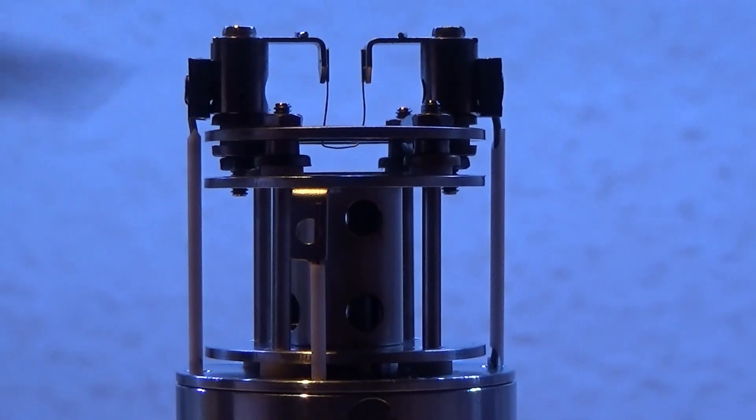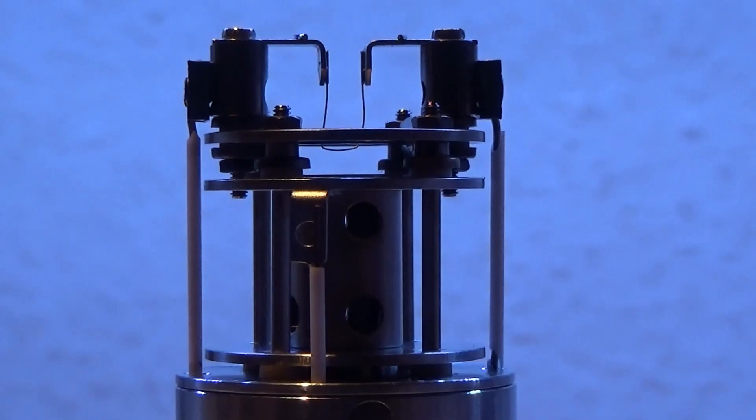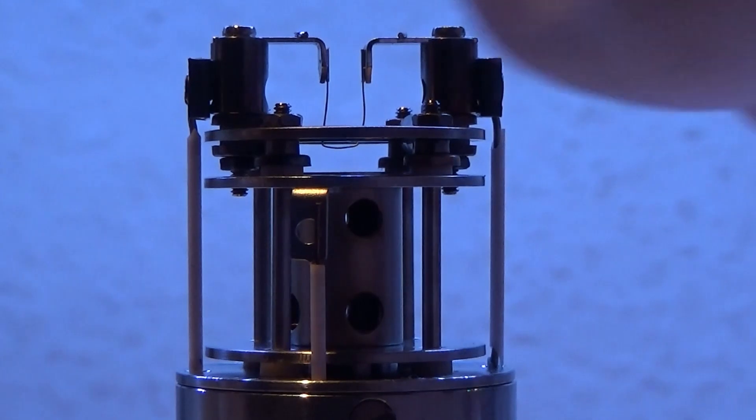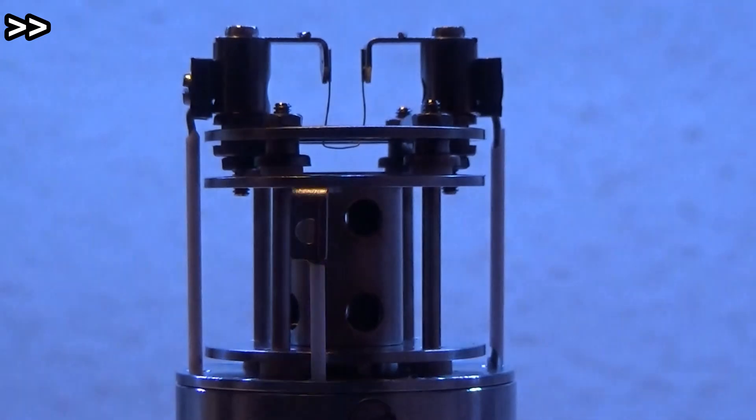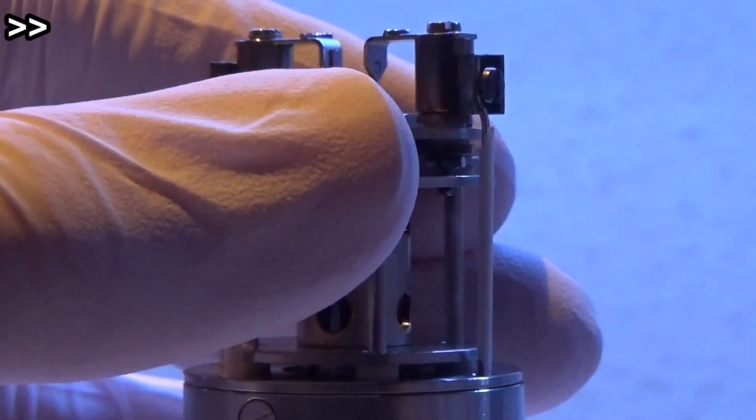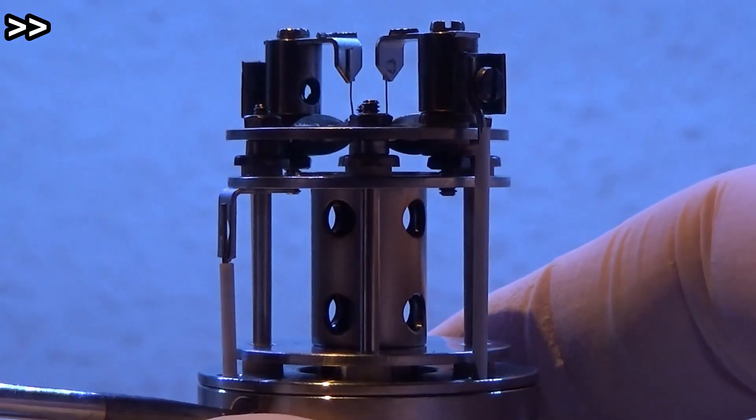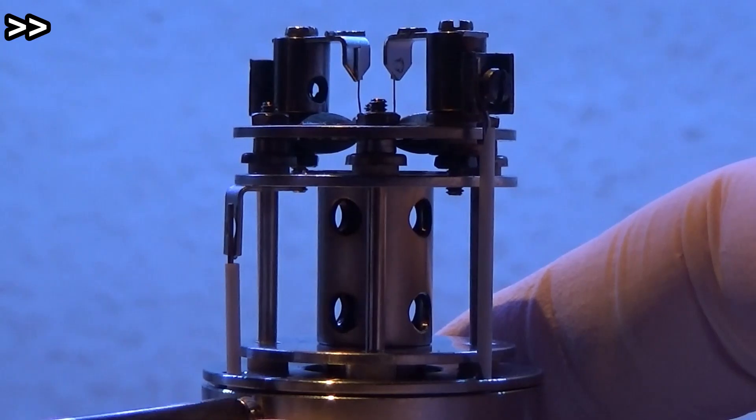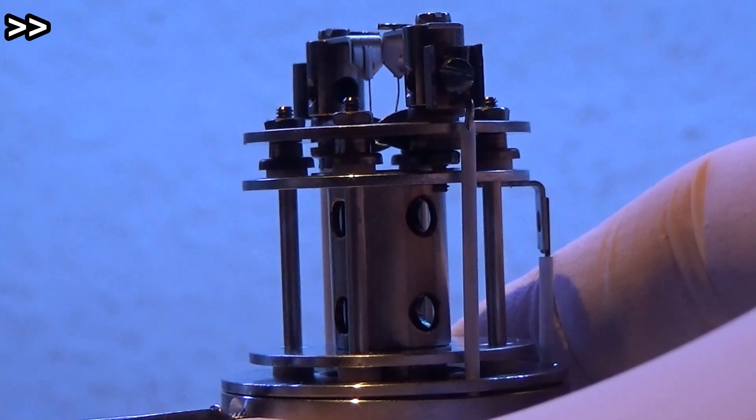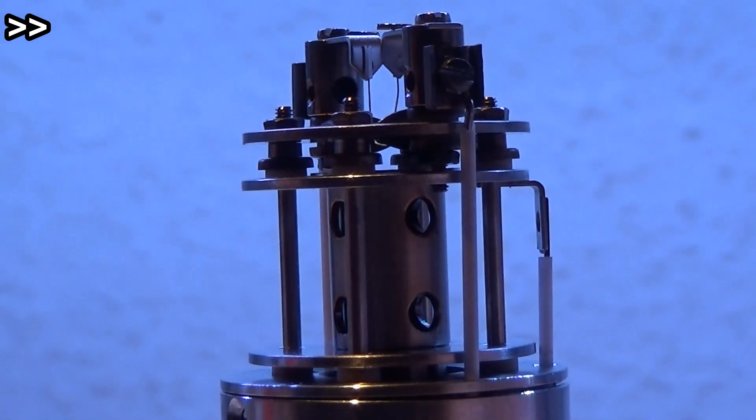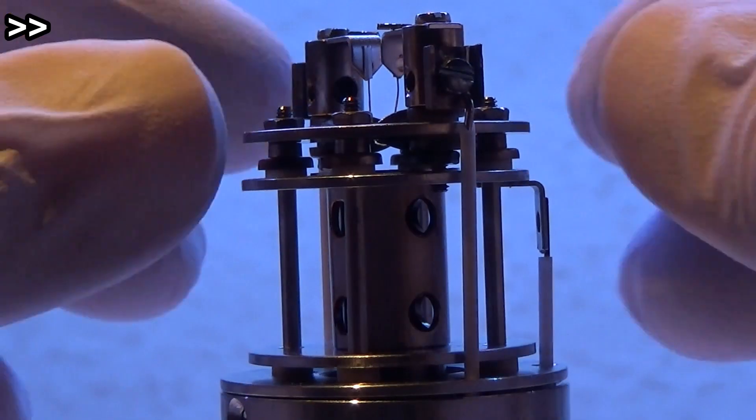The top plate here is also at ground potential, and you can see the wires coming up on either side for the filament. The filament can also be tuned with a small voltage, typically like plus minus 30 volts. Well, let's take this off, shall we?